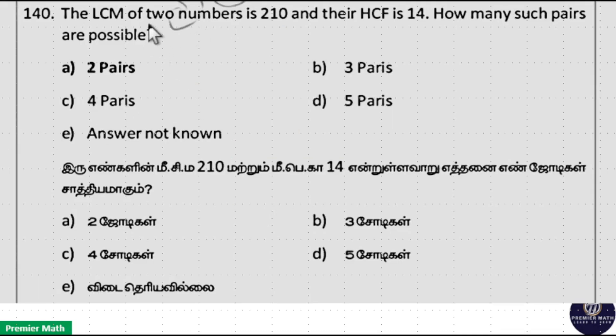Next is LCM of 2 numbers is 210 and their HCF is 14. How many such pairs are possible? Here LCM into HCF means 14 into 210, which is equal to product of these 2 numbers. Here numbers I can write it as 14X and 14Y. So product of 2 numbers mean 14X into 14Y, which is equal to LCM into HCF.